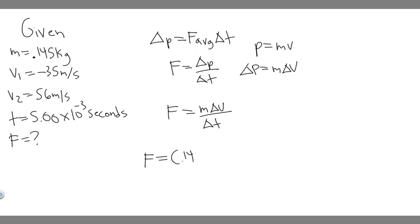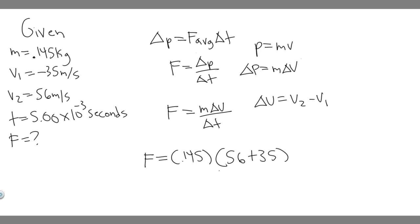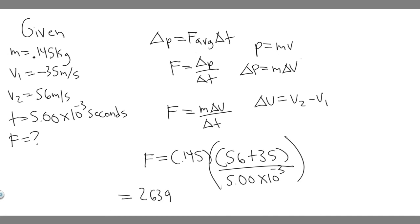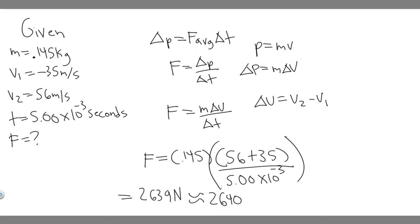Force equals the mass, which is 0.145, times the change in velocity: V sub 2 minus V sub 1, which is 56 minus negative 35, or 56 plus 35. All divided by the time, which is 5.00 times 10 to the minus 3 seconds. So that's 0.145 times 91 divided by 5.00 times 10 to the minus 3. Plugging into the calculator, you get 2639, which I'll round to 2640 newtons.